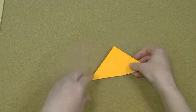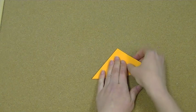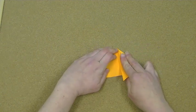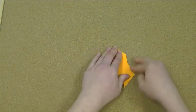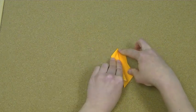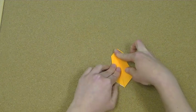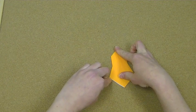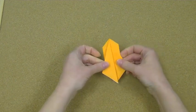Now I'm going to go ahead and turn it over. And what I want to do now is fold down this flap like so. And do the same thing on the other side as well. So I get something like this.